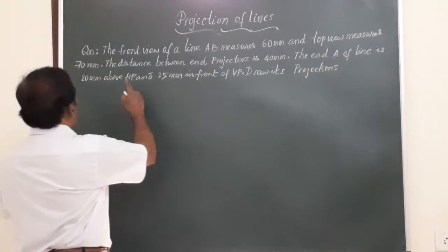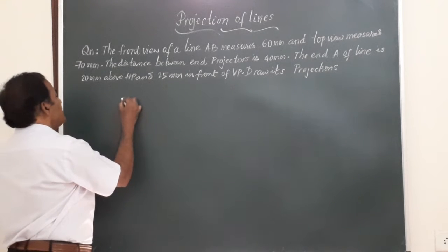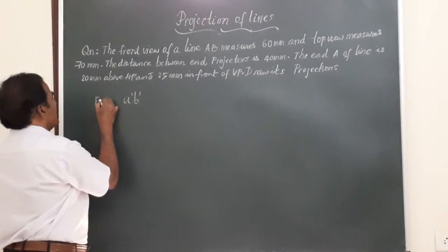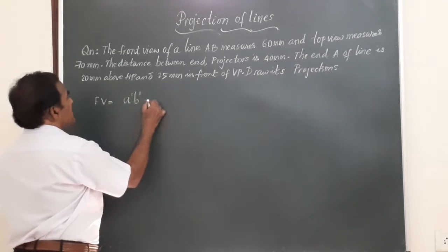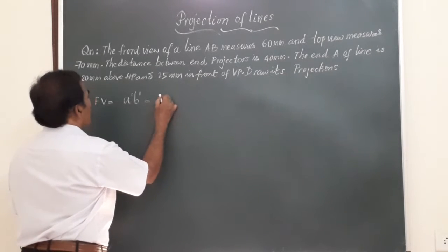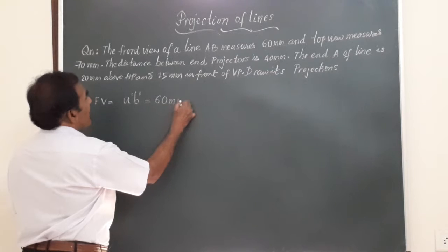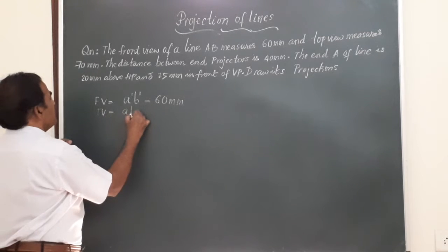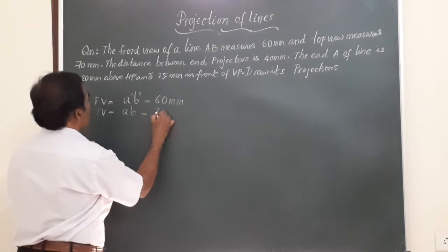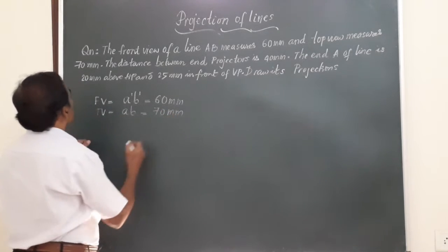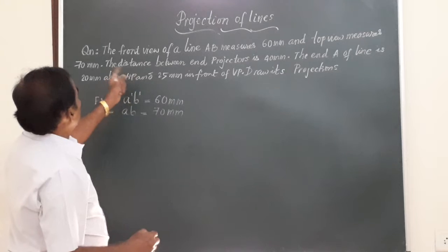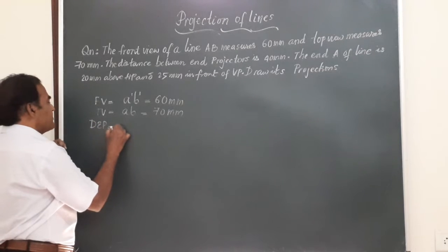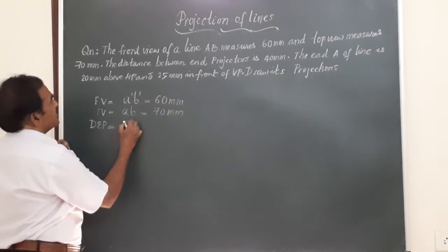Now friends, you can see here the front view of the line AB is represented by A' B'. The front view FV = A' B' is given to be equal to 60 mm, and the top view TV = AB is 70 mm. We also have the distance between end projectors, which I represent as DEP. DEP is given as 40 mm.